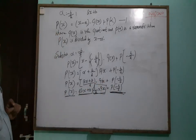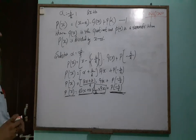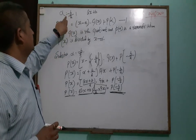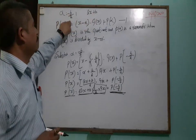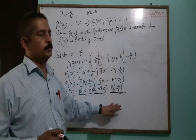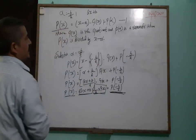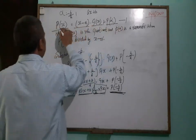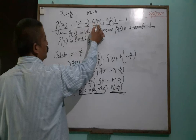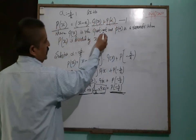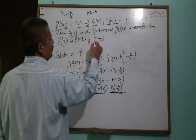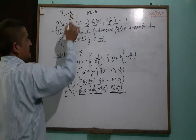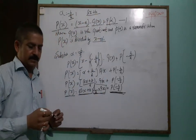If sometimes a question asks you to prove that something is a zero or a factor, and the remainder of ax plus b is equal to minus b by a — how to prove it — then this is the method we use. Because p(x) divided by x minus alpha gives quotient Q(x), and the remainder is p(alpha). We check this with different types of examples.